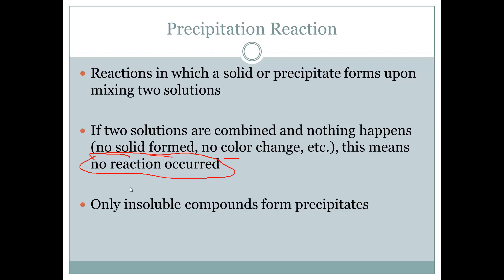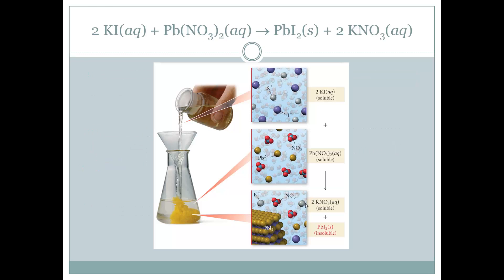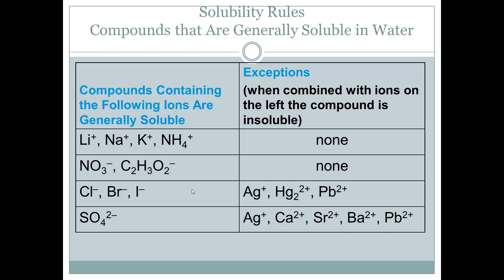Only insoluble compounds will form a precipitate. For instance, here's an example: we have potassium iodide mixing with lead nitrate. Here's the potassium iodide, here's the lead nitrate — they're both soluble. But when they're mixed together, the lead iodide is formed, and that's this yellow precipitate that we see. We actually have a list of rules to signify which ones will be soluble and which ones won't.